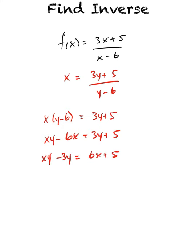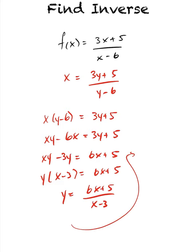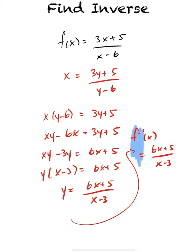Since I want to isolate for y here, I'm going to factor this out, giving us x minus 3 equals 6x plus 5. And dividing out, we get y, which is our inverse, is 6x plus 5 over x minus 3. Therefore, the inverse of the function is 6x plus 5 divided by x minus 3.